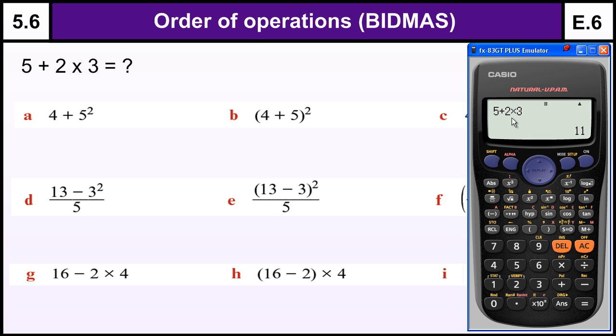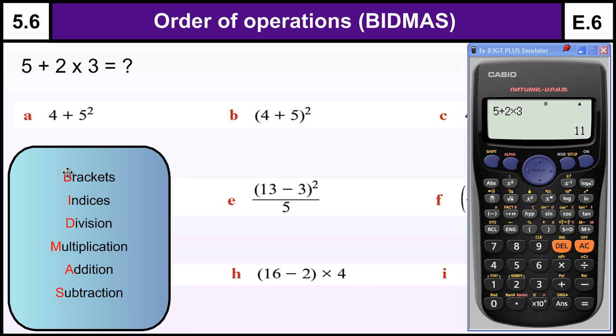Because the calculator knows that you must do things in a certain order, and that order, if I bring it back in again, is Brackets, Indices, Division, Multiplication, Addition, Subtraction. So we must do this multiplication before we do this addition.